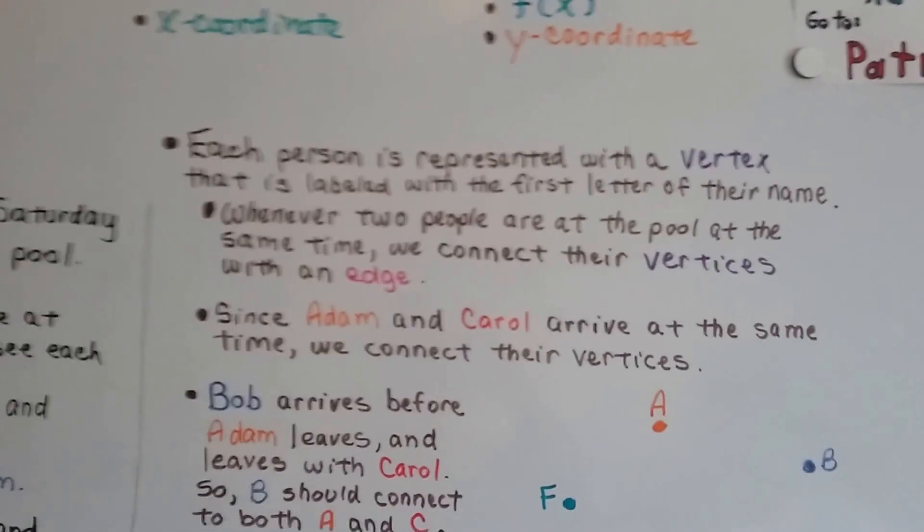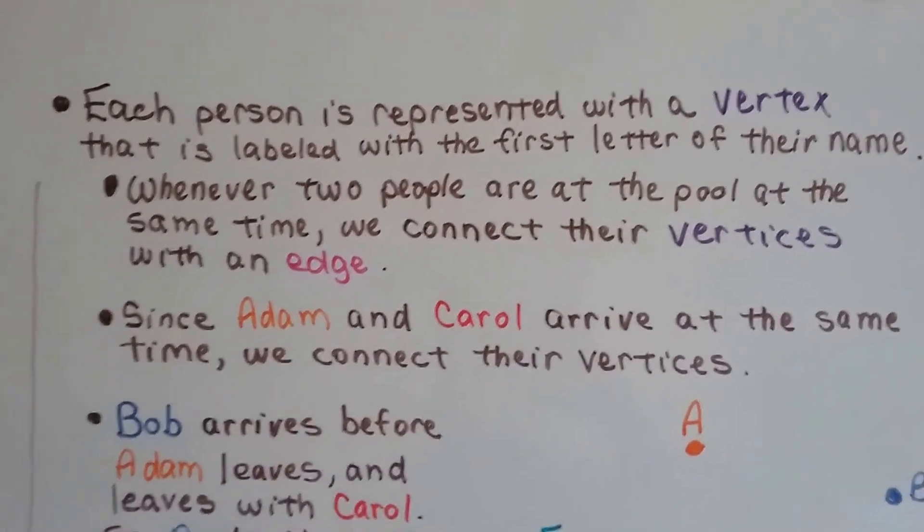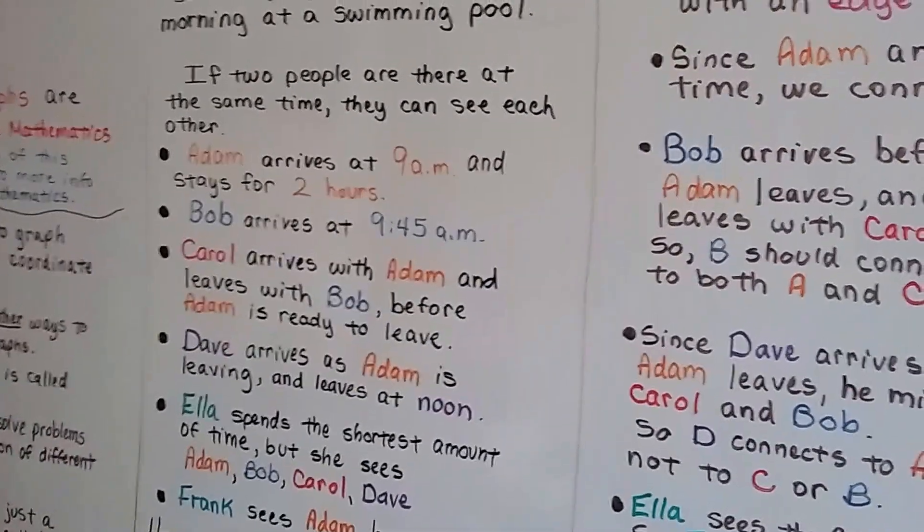Each person is represented with a vertex that's labeled with the first letter of their name. We've got A, B, C, D, E, and F.